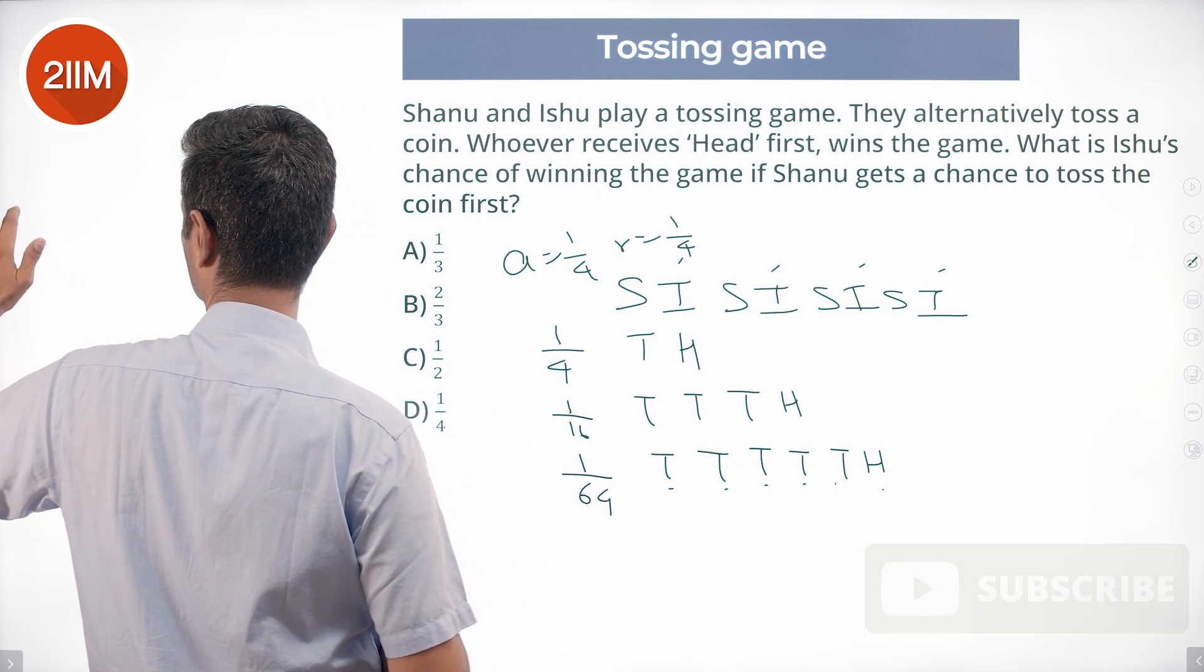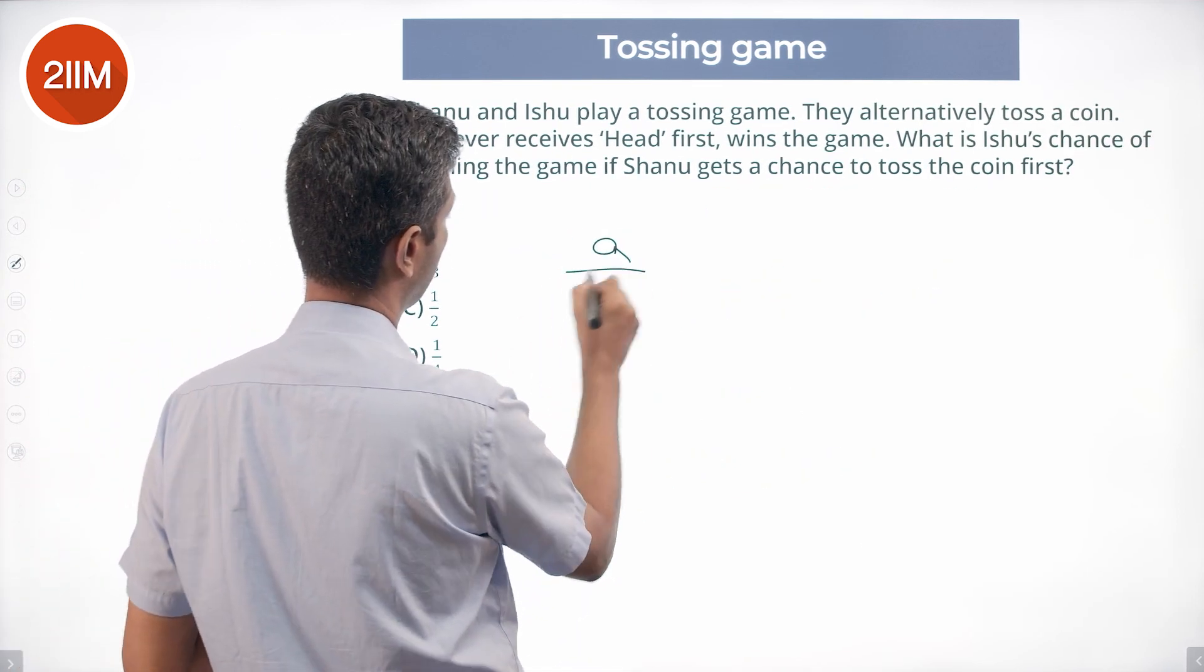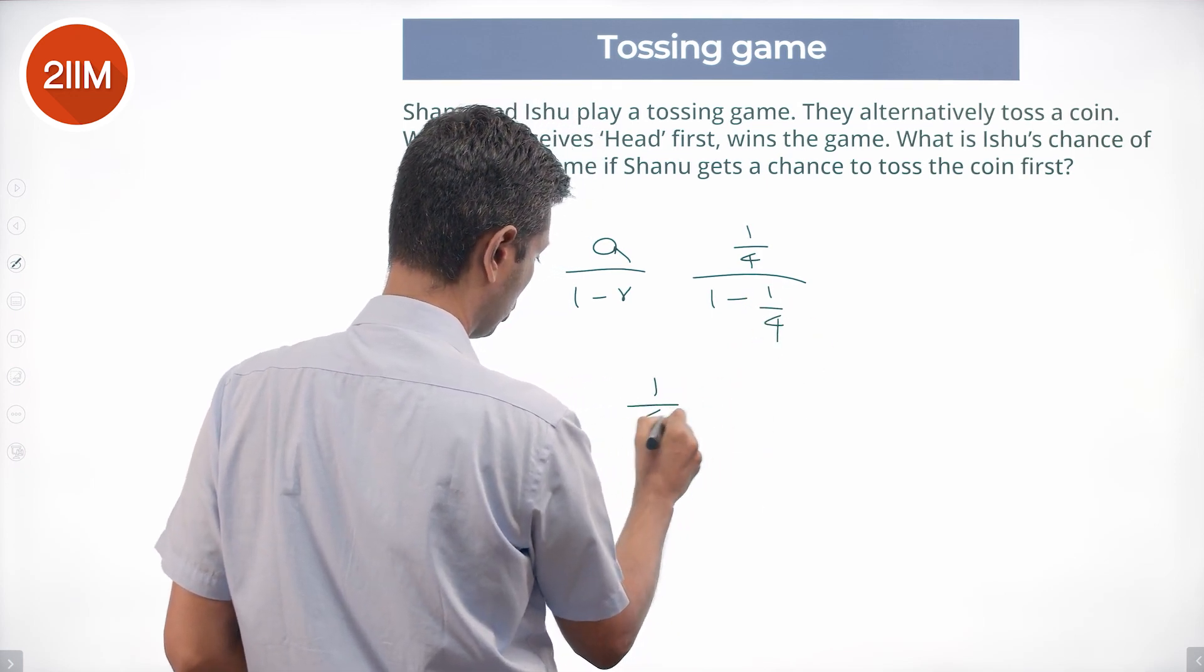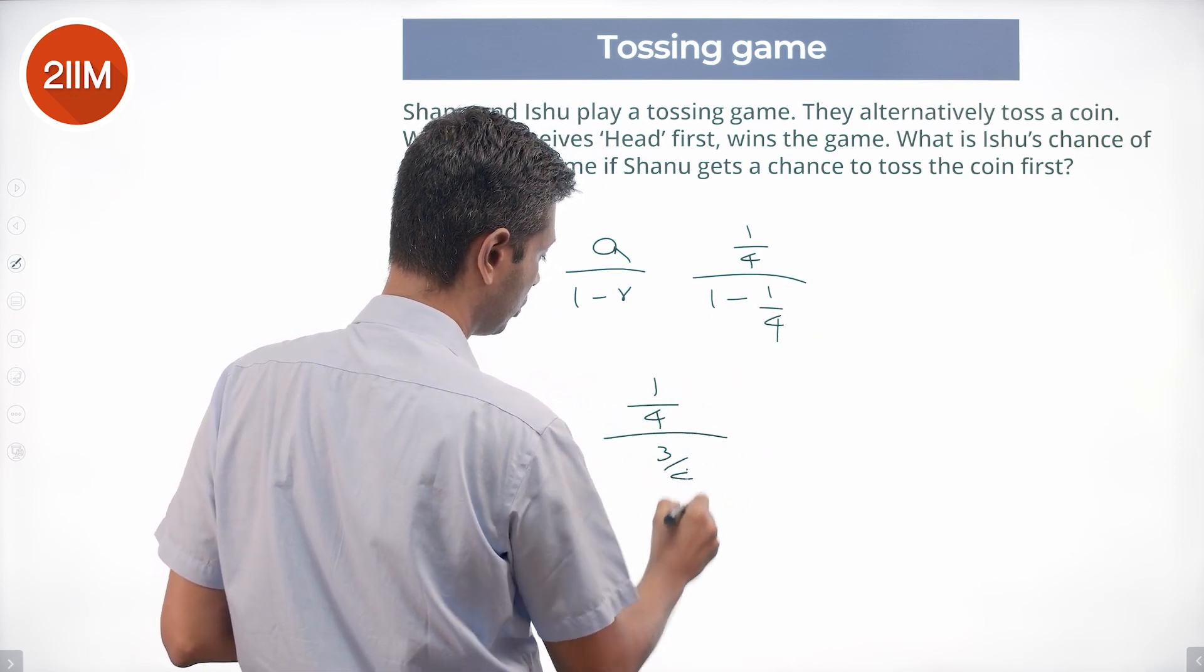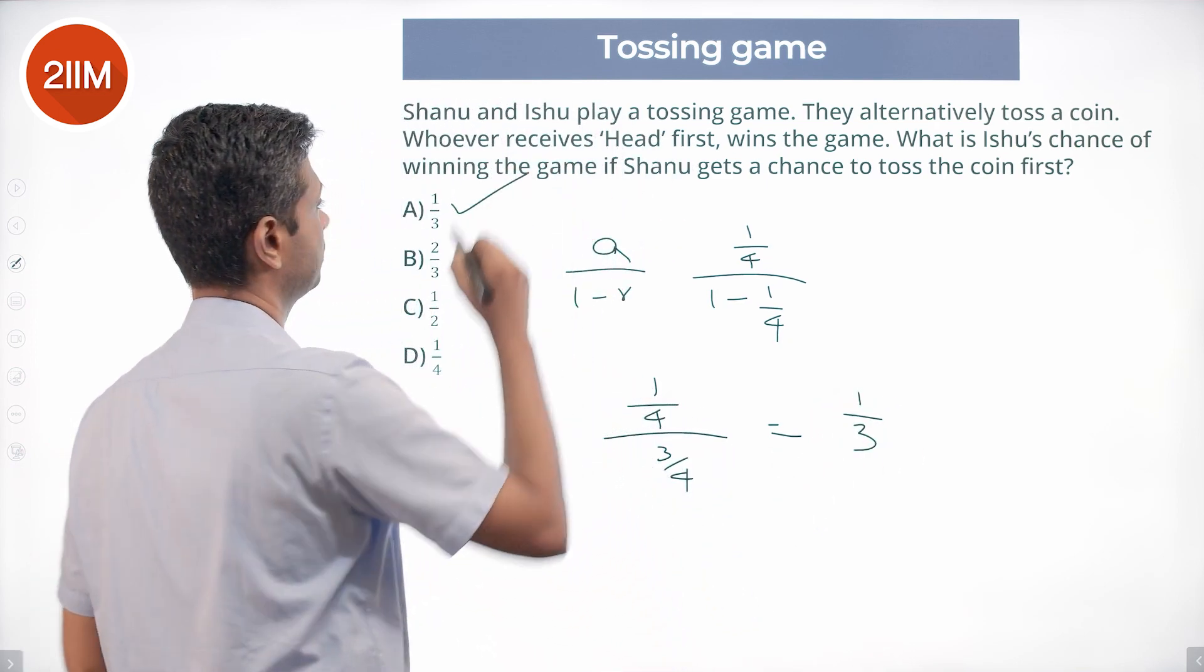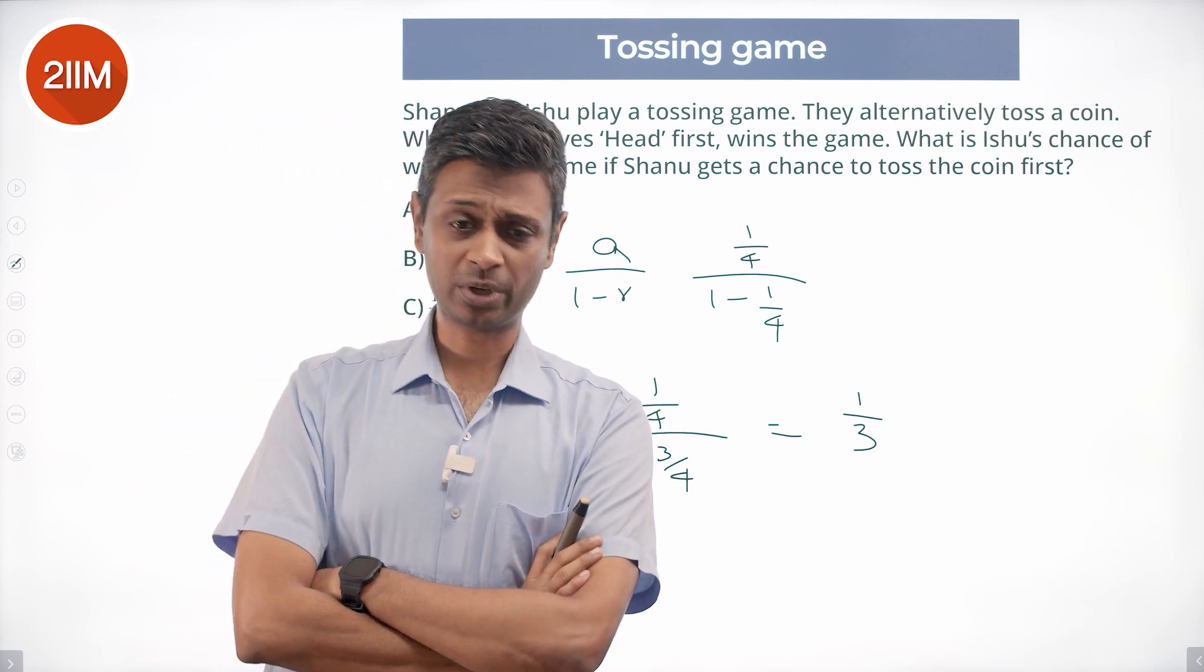We need to find a by 1 minus r. 1 by 4 by 1 minus 1 by 4. 1 by 4 by 3 by 4. 1 by 4 into 4 by 3 equals 1 by 3.